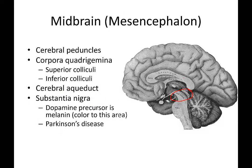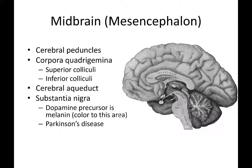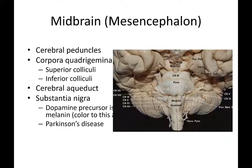The cerebral peduncles are known as pedestals. They hold up the two sides of the cerebrum. They are locations where tracks of nerves are branching off — some going to the right and some to the left hemisphere. From an anterior view, we can see these cerebral peduncles where the fiber tracks branch into the right and left cerebral hemispheres.